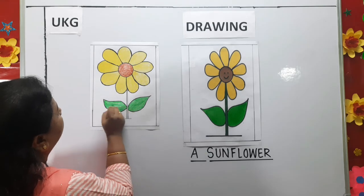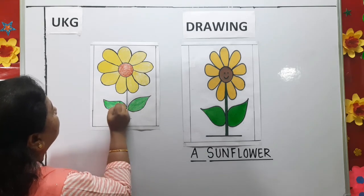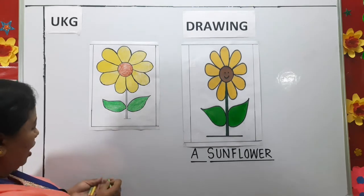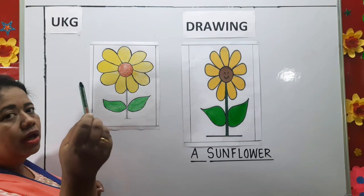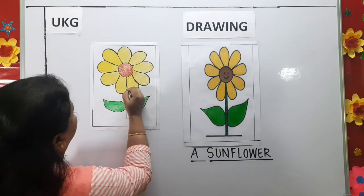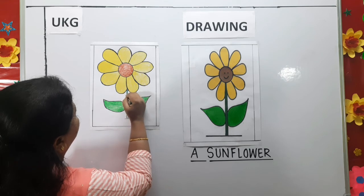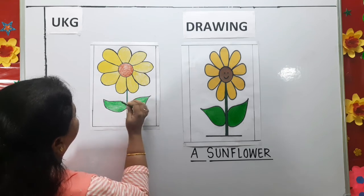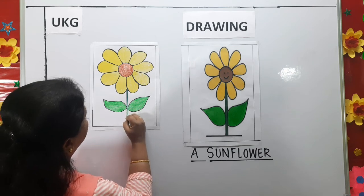Now here I am using light green for the leaves. Cover all the white spaces. Now I am going to use dark green color for the stem. And see children, how beautiful it looks. Try to cover all the white spaces.